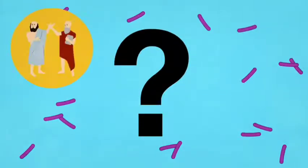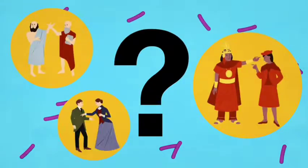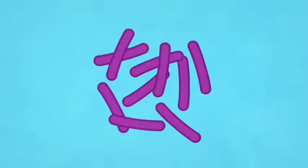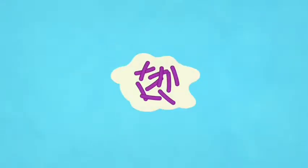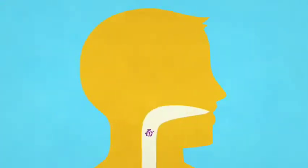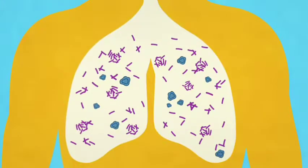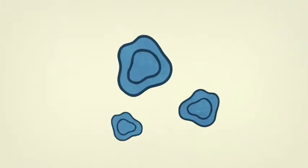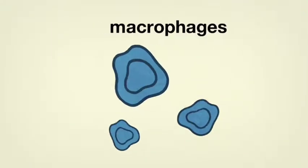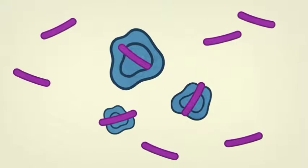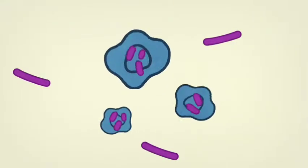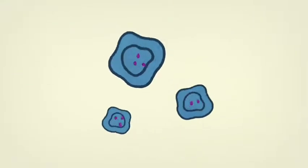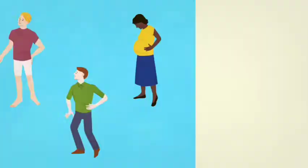TB bacteria, called Mycobacterium tuberculosis, are airborne. They travel into our airways and infect our lungs. Here, immune cells called macrophages rush to the infection site, attempting to absorb and break down the bacterial invaders. In many cases, this response is enough to remove the bacteria.